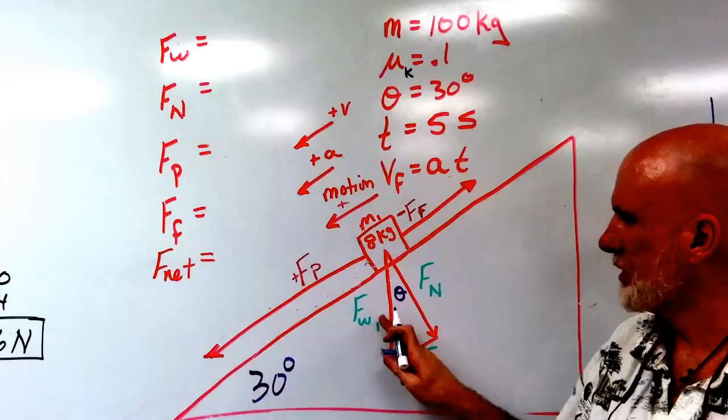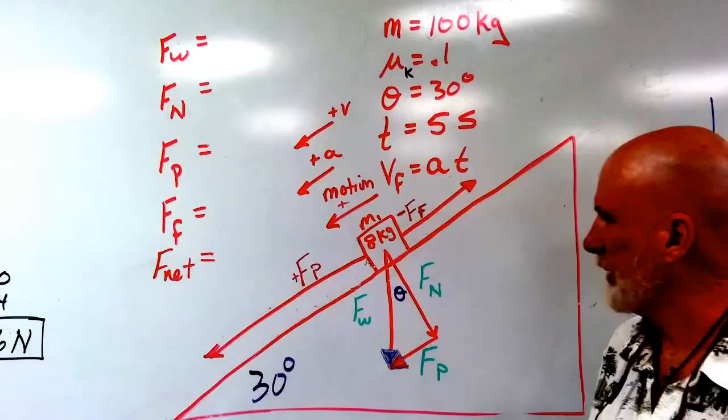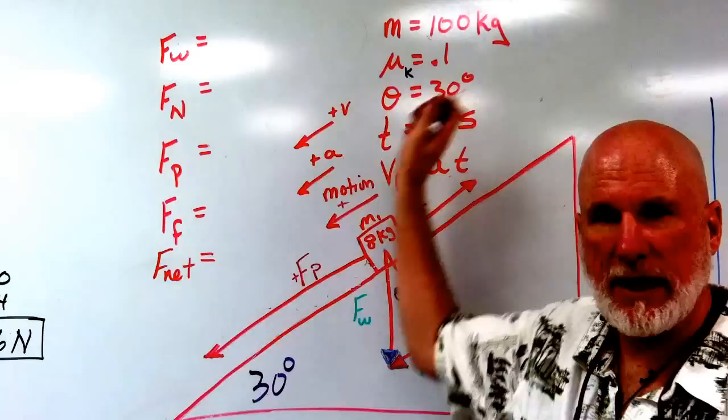Here are the FW, FN, and FP. FP is positive. FF is negative. Motion is this way. Acceleration, velocity, all down the mountain.